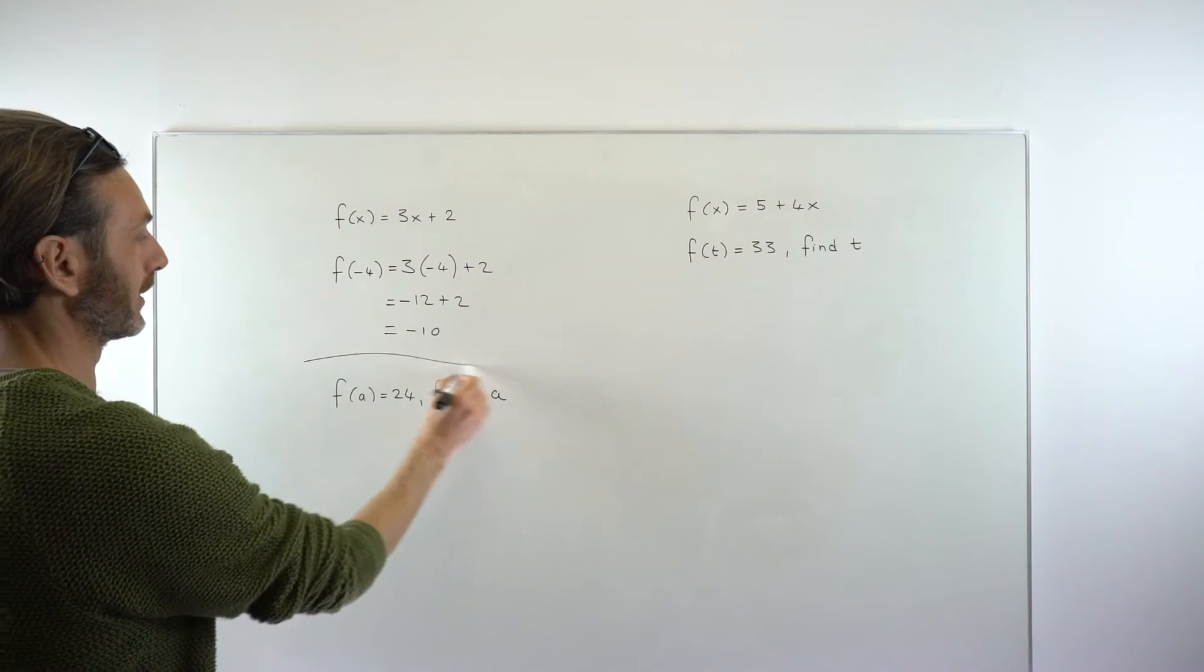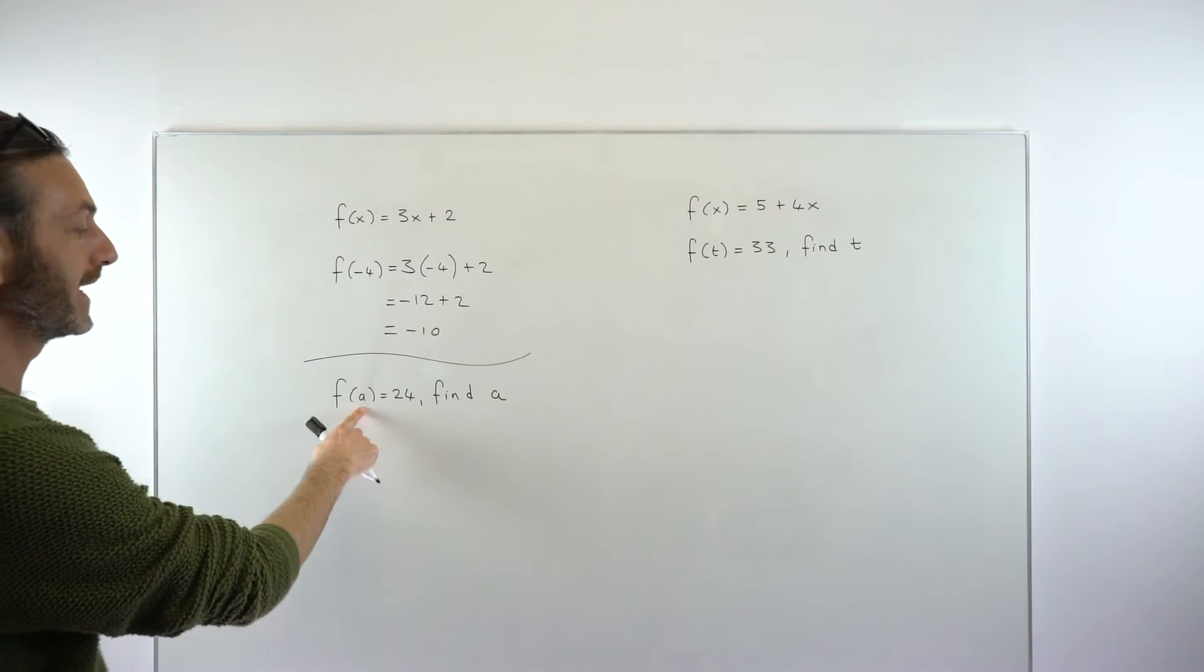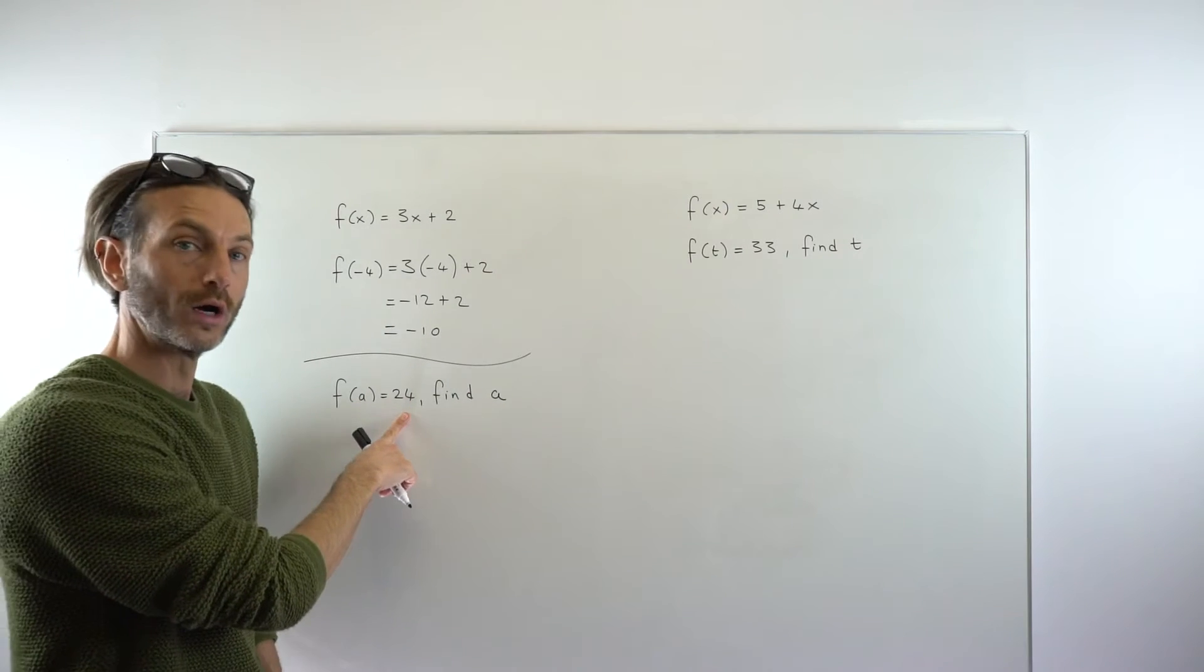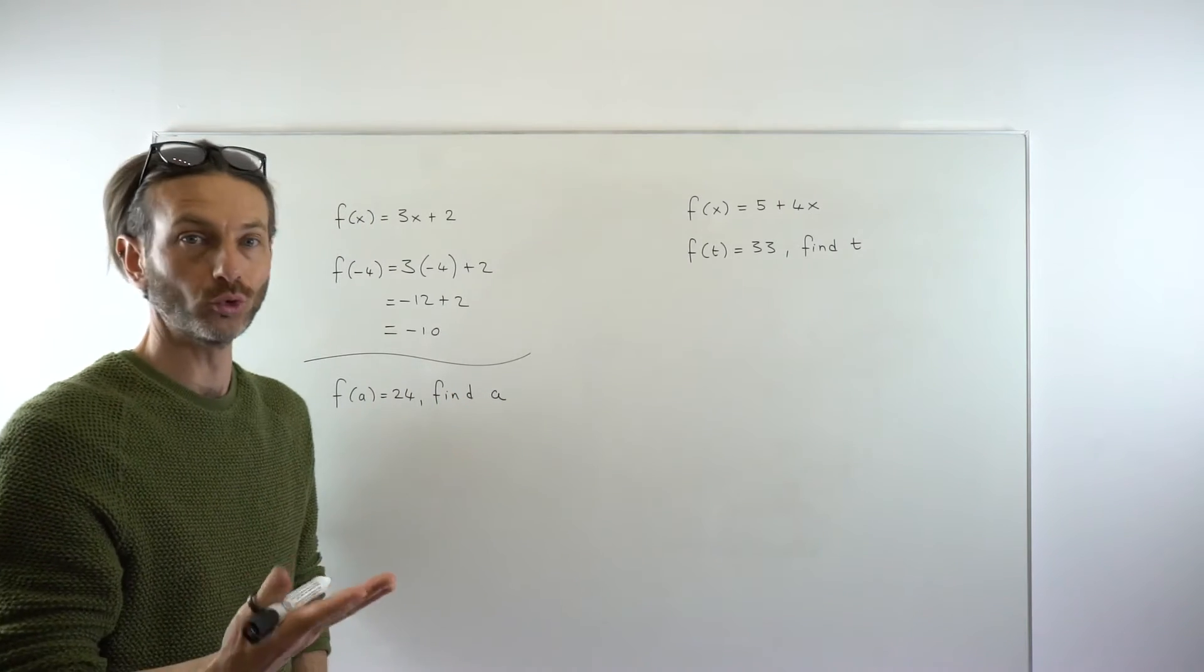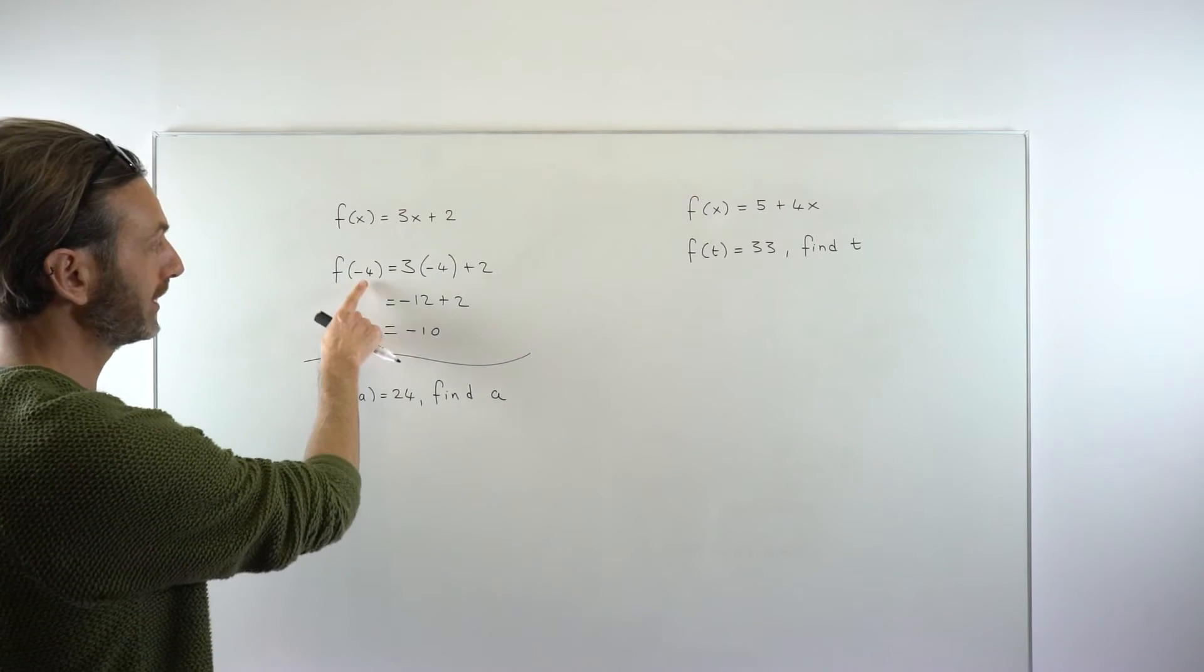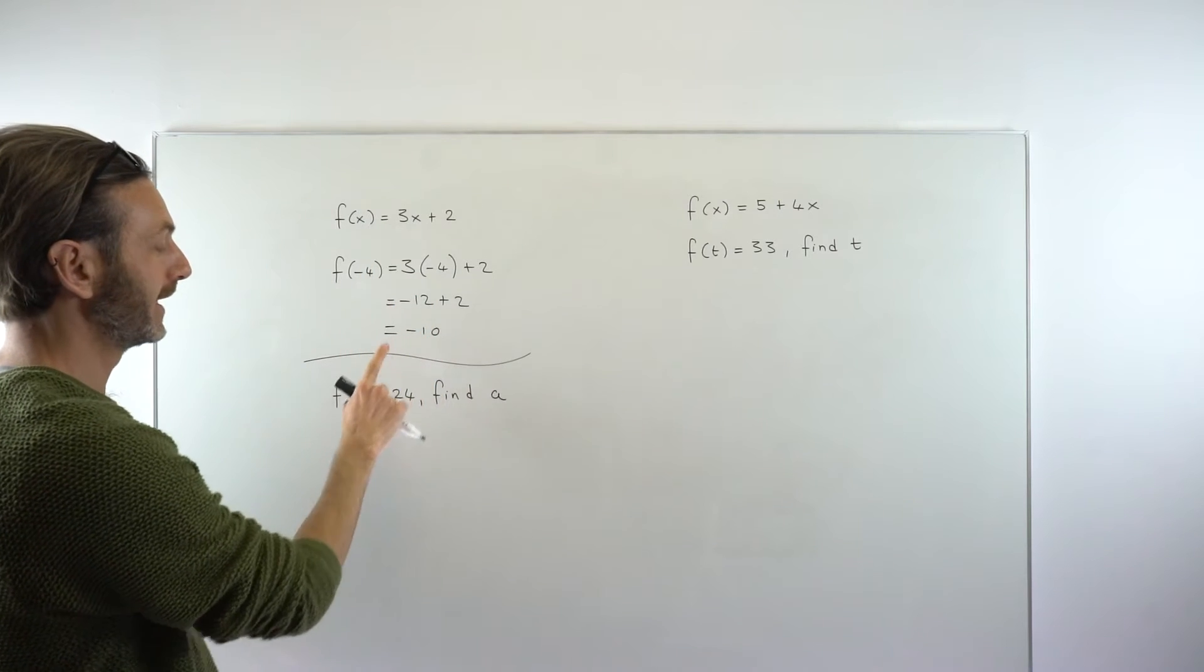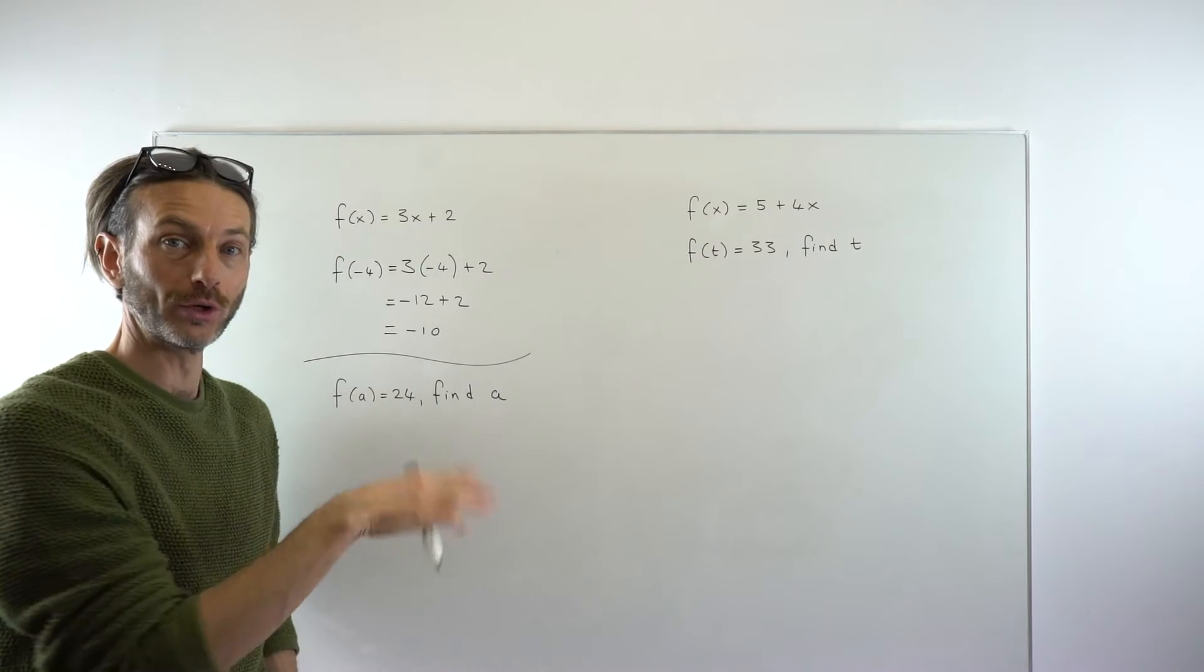In the next question type, which would be like this guy here, they're asking us to put some number a into the function to get an output value of 24. They're calling the value we're putting into the function a just as a sort of placeholder, just to distinguish it from x. And it's that a that we're trying to find. So in this first question, we were putting a number into the function to get a number out. In this part, we know what number we're going to get out. We want to figure out what number goes in.